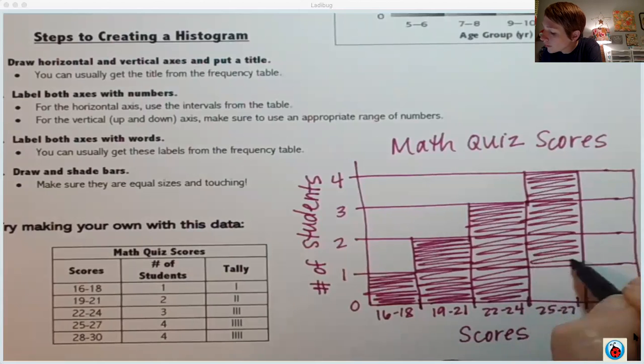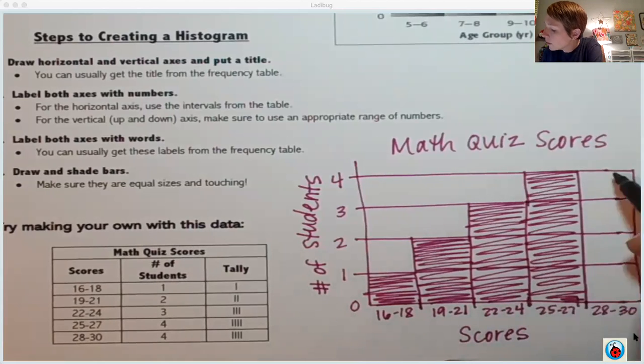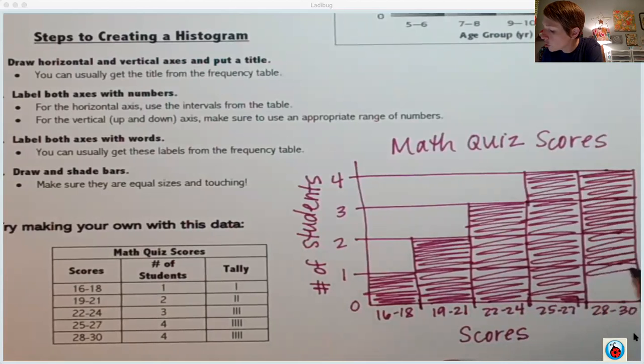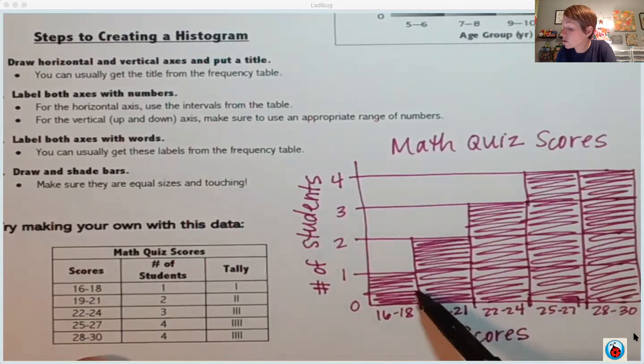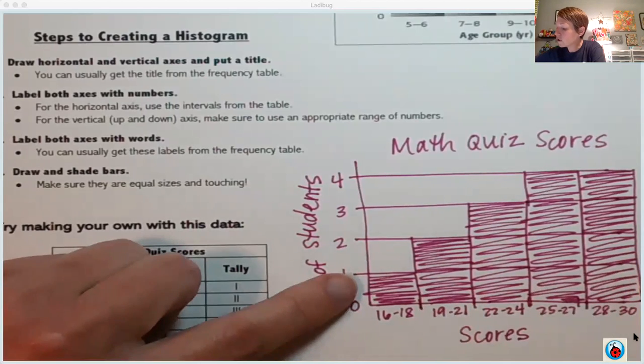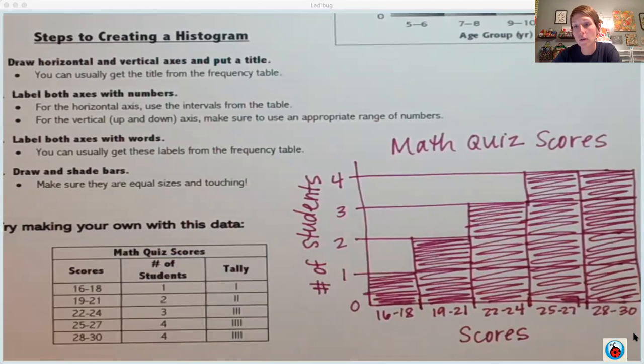Now my bars aren't all perfectly the same width, but they're pretty close. I don't have any that are super skinny next to ones that are super fat. Notice also all my bars are touching. There's no space in between and there's no space inside the lines either at the very beginning of my histogram or at the end.